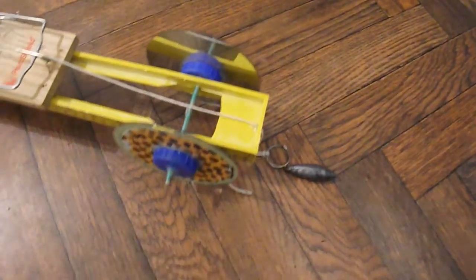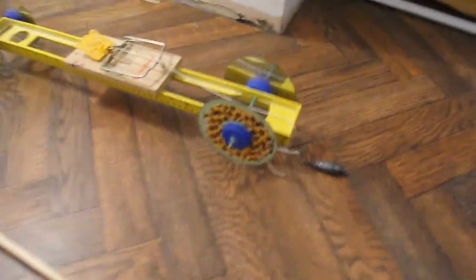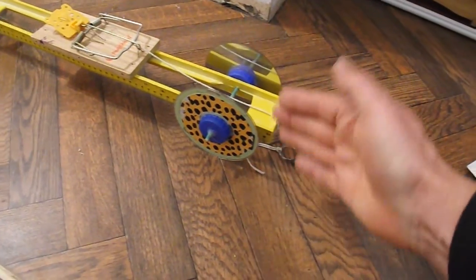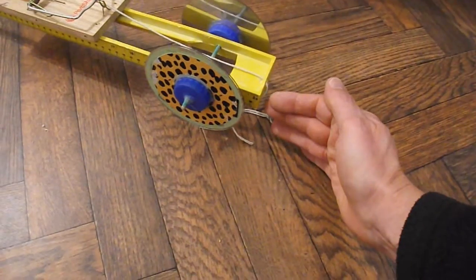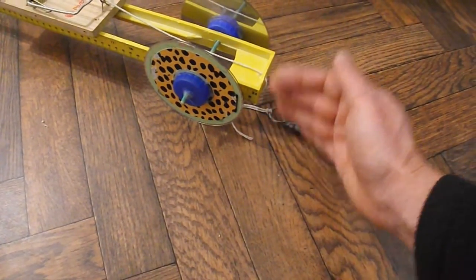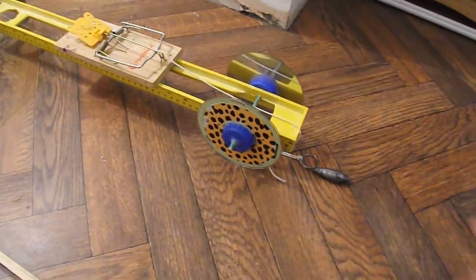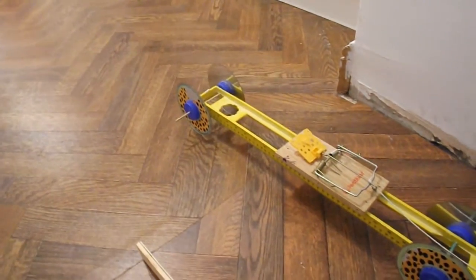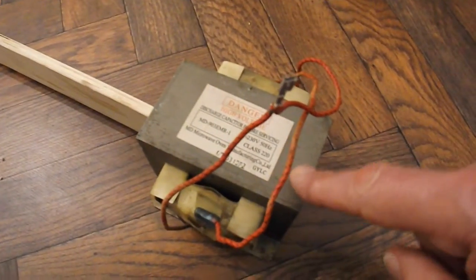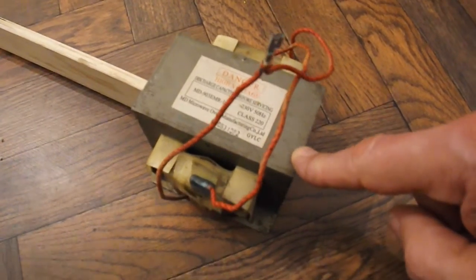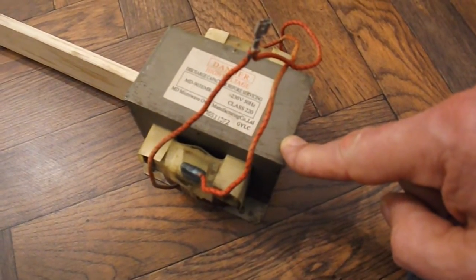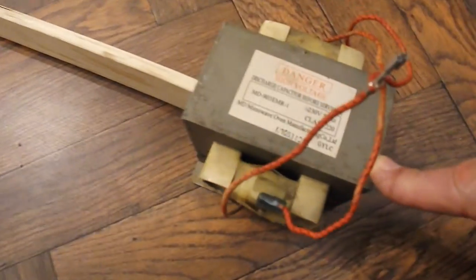What I'm going to do is what I did in the first video, which was brace the back of the car so it can't roll backwards and then allow the rat-trap to pull the weight forwards and project the car forwards. To brace the back of the car, I've got a large transformer here. This comes out of a microwave oven.